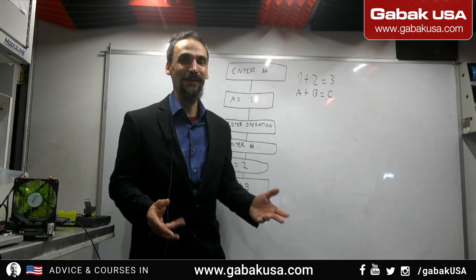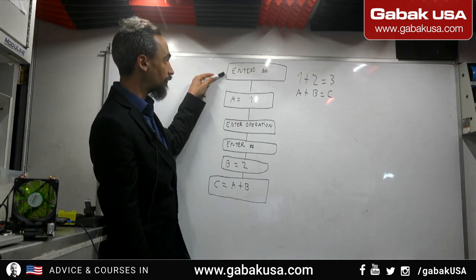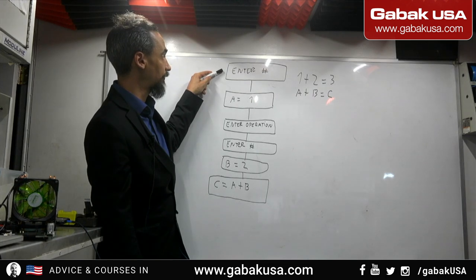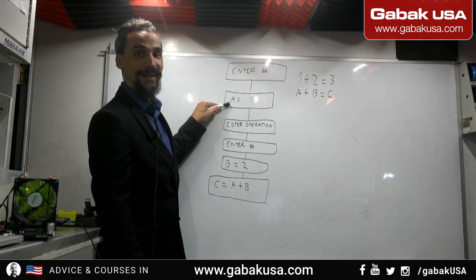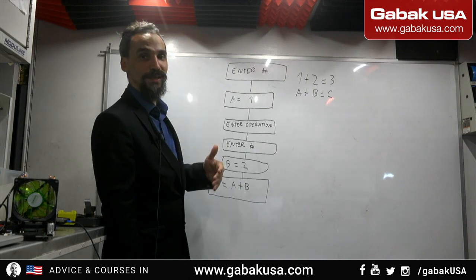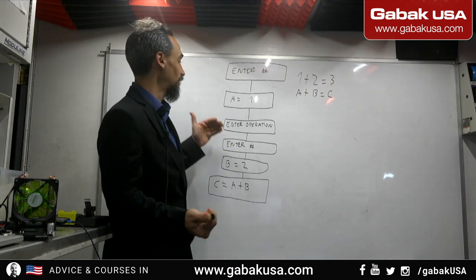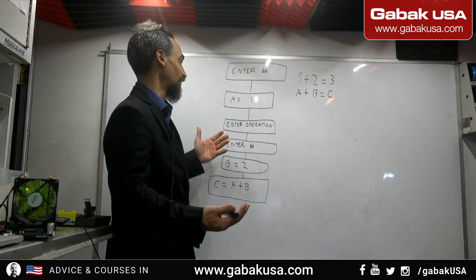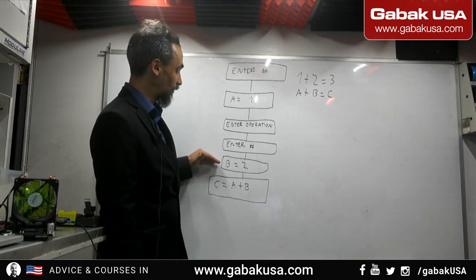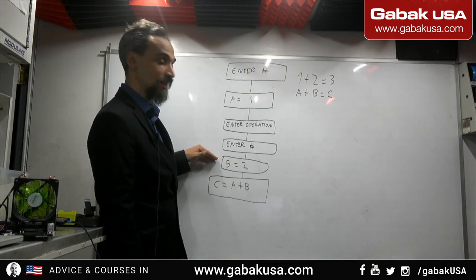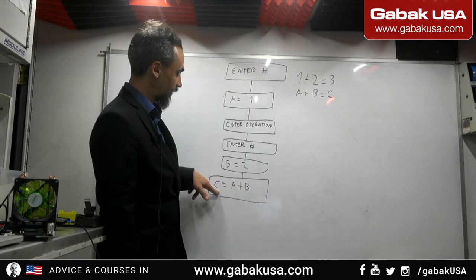Here is another example to illustrate this. Let's say you want to start coding a simple calculator. You enter a number, which is saved in variable 'a', then you enter the operation — it could be plus, minus, multiply, or divide. Then in the next step you enter another number, which is saved in variable 'b'.